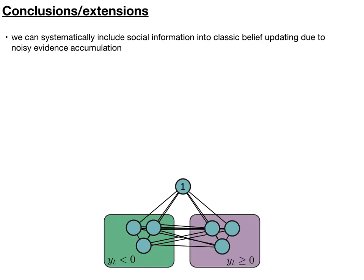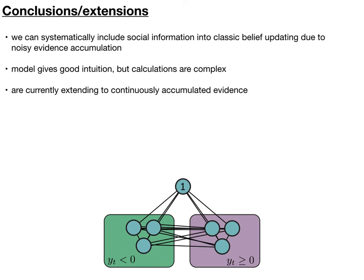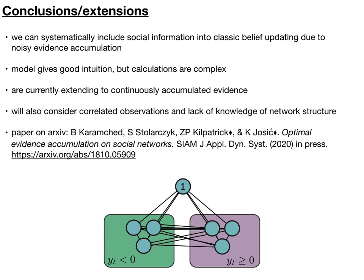So we found several things from this model. First of all, that we have a systematic Bayesian optimal way of accumulating evidence on social networks given some noisy evidence accumulation process. These calculations are fairly complex, but we're confident that we can reduce the resulting models to more heuristic models that are amenable to analytical analysis. And we're presently extending this work to consider cliques where evidence is accumulated continuously and also more complex network formulations. We also consider the case of correlated observations where both individual agents have correlated information with one another and maybe also individual agents have information that's correlated across time. And also cases where agents have to infer the structure of the network. This work is currently in press at the SIAM Journal of Dynamical Systems and also available on Archive. Thanks for your time.